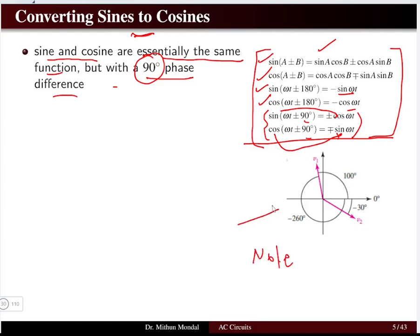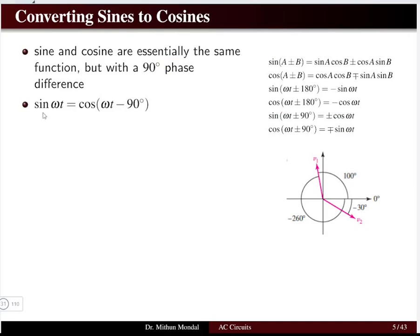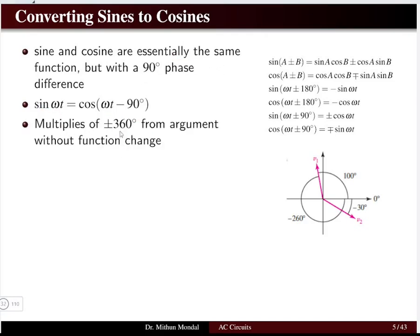The angle θ is always measured in the anti-clockwise direction from the horizontal zero-degree axis. A positive angle measured anti-clockwise might be 100 degrees, while a clockwise measurement gives a negative angle, such as −30 degrees. Sine of ωt equals cos(ωt − 90°); they are essentially the same with a 90-degree phase difference. Generally, we convert angles into multiples of plus or minus 360 degrees.